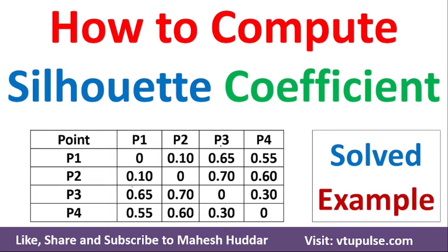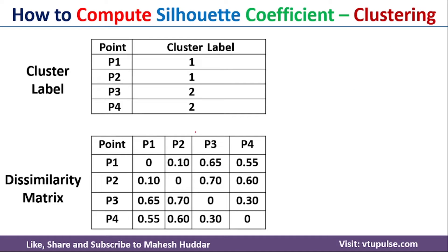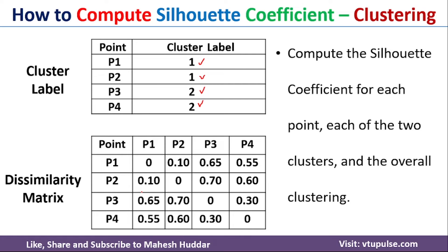Welcome back. In this video, I will discuss how to calculate the silhouette coefficient in a clustering algorithm with a simple solved example. We have been given four data points P1, P2, P3, and P4. P1 and P2 are present in cluster number 1, and P3 and P4 are present in cluster number 2. We have also been given a dissimilarity matrix. Using this data, we need to calculate the silhouette coefficient for each data point, for each cluster, and for the overall clustering algorithm.